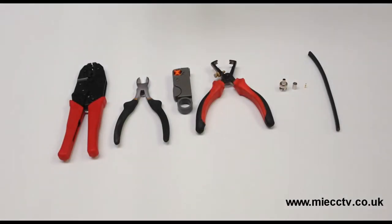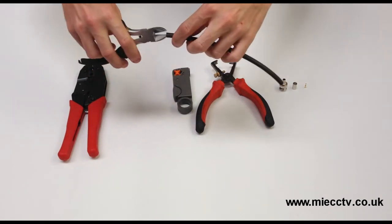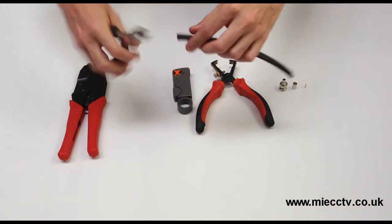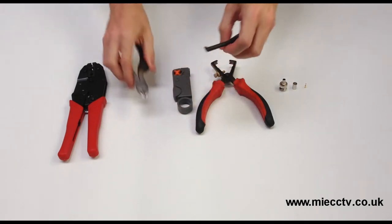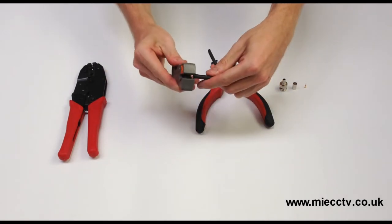This video will demonstrate how to successfully crimp our 3-piece BNC crimp connector. For this you will require a 3-piece crimp connector, comprising of the crimp ferrule, your center contact pin, and the main body of the connector. You will also require a BNC crimp tool.